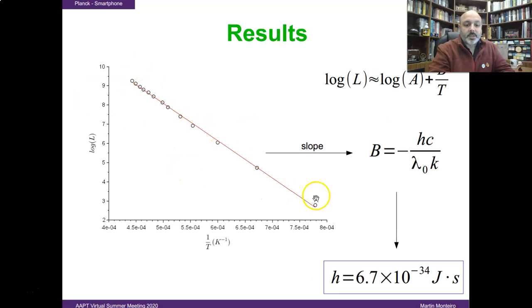And from the slope of this plot, we could obtain the parameter B of Wien's equation, and knowing the speed of light, Boltzmann's constant, and the mean wavelength of the sensor, we could obtain Planck's constant, that we have here, as a very accurate value.